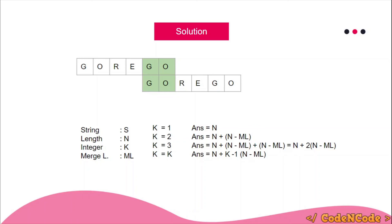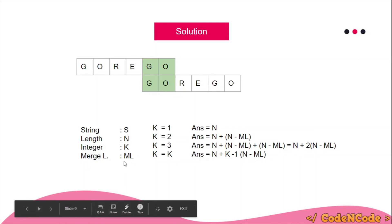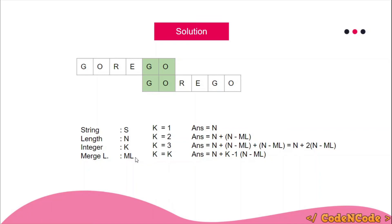I'll post the link to the solution in the description. I used the KMP algorithm — specifically the pi function — to calculate the maximum merge length. Links to the string algorithm series, the solution, and the problem itself will all be in the description. If you have any doubts, ask in the comment section. Thank you for watching, and keep coding!